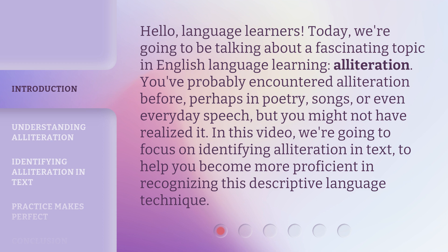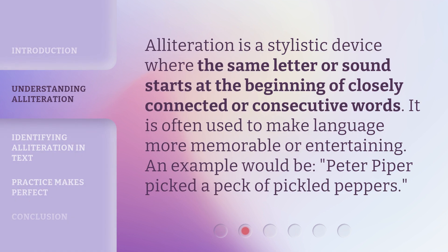You've probably encountered alliteration before, perhaps in poetry, songs, or even everyday speech, but you might not have realized it. In this video, we're going to focus on identifying alliteration in text, to help you become more proficient in recognizing this descriptive language technique. Alliteration is a stylistic device where the same letter or sound starts at the beginning of closely connected or consecutive words. It is often used to make language more memorable or entertaining. An example would be: Peter Piper picked a peck of pickled peppers.